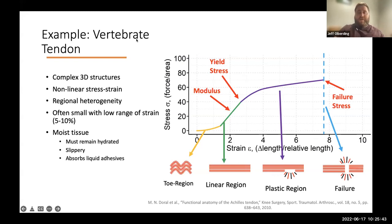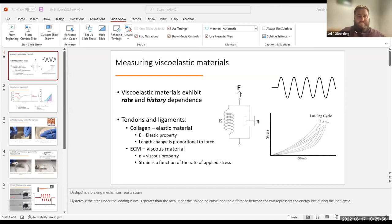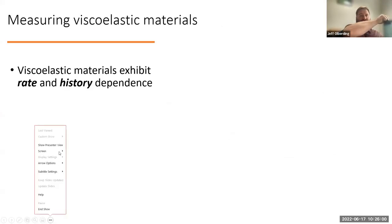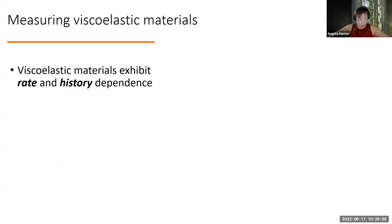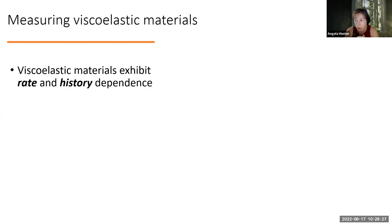I'm going to hand this over now to Dr. Horner, who will talk about some of the ways her lab has overcome some of these challenges. To think about why tendons and ligaments are going to be even harder to test than other tissues, we have to keep in mind that they are viscoelastic materials. One of the things to consider in these experiments is the overall length change you're going to apply to the system, as well as the rate at which you apply tensile stress. Because viscoelastic materials have both the properties of elastic materials and viscous materials, they're going to be rate and history dependent in their material properties and performance.